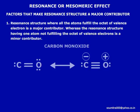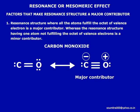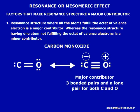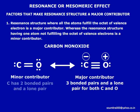For example, in carbon monoxide, we have two structures. The second structure is a major contributor because here both carbon and oxygen have an octet of valence electrons. The first one is not as stable because here carbon does not fulfill the octet of valence electrons.